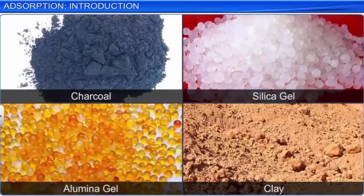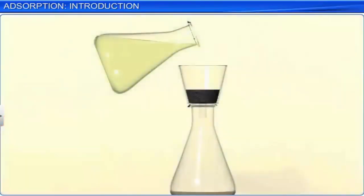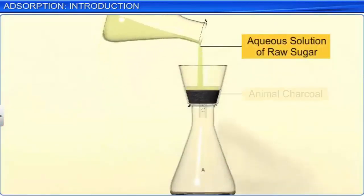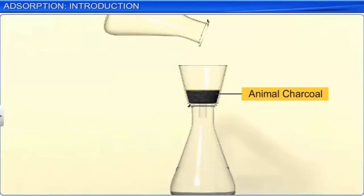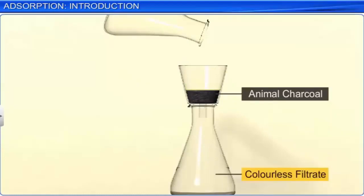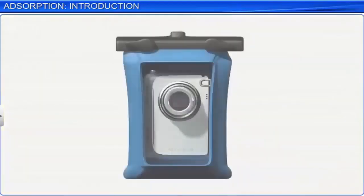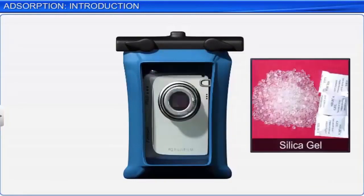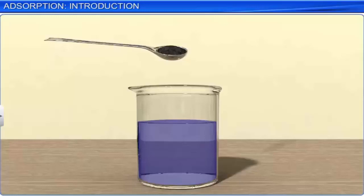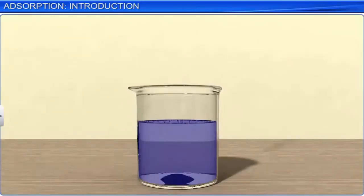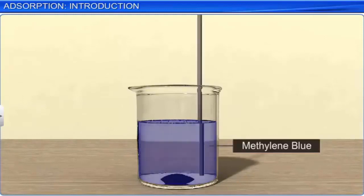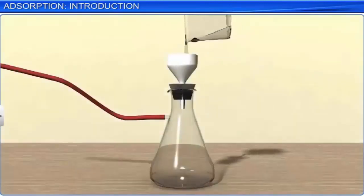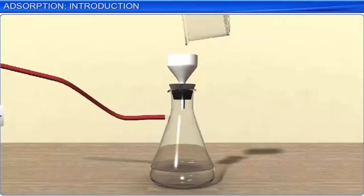Let's look at some examples of adsorption. While clarifying sugar, an aqueous solution of raw sugar is passed over beds of animal charcoal. The animal charcoal adsorbs the undesirable colors, and a colorless sugar solution is obtained. When delicate electronic equipment is stored, silica gel is used as a dehumidizer since it makes the air dry by adsorbing the water molecules present in it. If you add some activated animal charcoal to a dilute solution of an organic dye such as methylene blue, stir the solution thoroughly, and then filter it, the filtrate obtained is colorless. This is due to the adsorption of the dye on the surface of the animal charcoal.